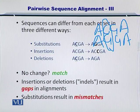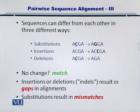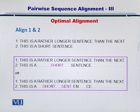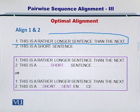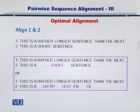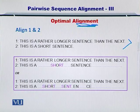These are the variations you need to consider while aligning sequences. Now I'll come to optimal alignment. Let me give you an example of what an optimal alignment is. Let's consider two sequences: the first is 'This is a rather longer sentence than the next,' and the second sequence is 'This is a short sentence.' If we try to align these two sequences, then we have two possibilities for an alignment.